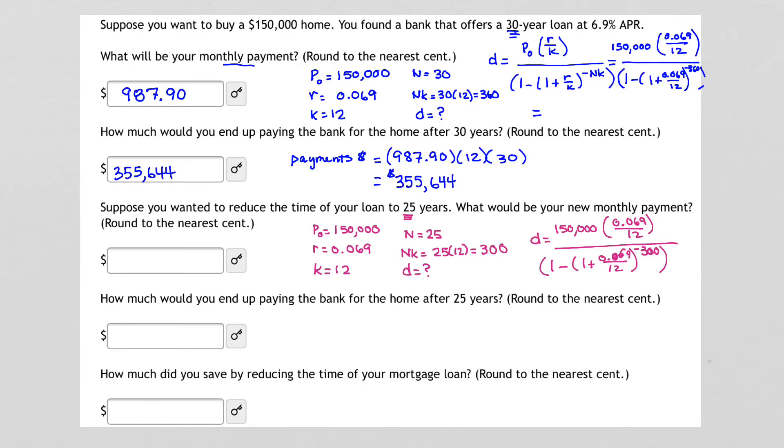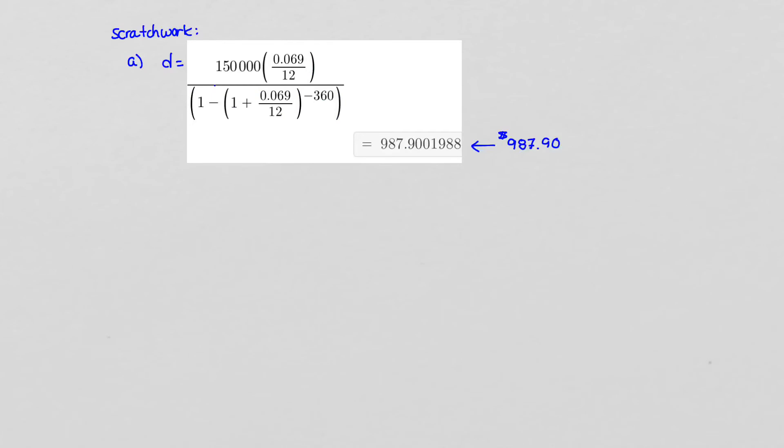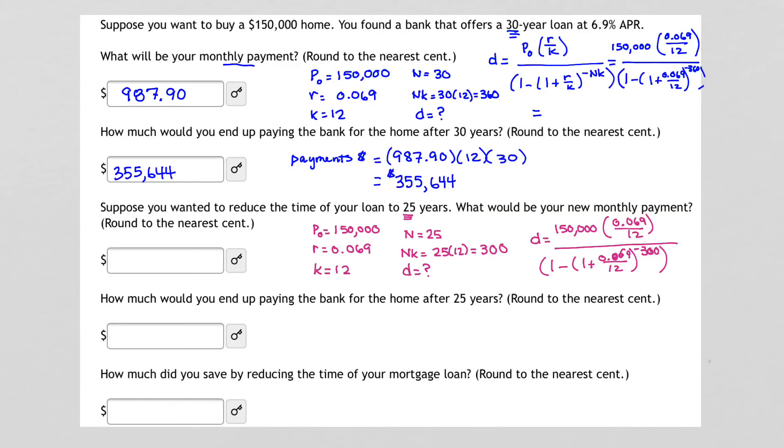When I evaluate that on Desmos, I get now, for the scratch work now, that D is equal to $1,050.62. Again, I'm using Desmos.com, the free online calculator, which I love, because all I have to do is just change the exponent from 360 to 300, and it gives me my new monthly payments. So let's put that in our answer box. So we'll go back, and we'll put $1,050.62. That's the monthly payments for a 25-year loan.